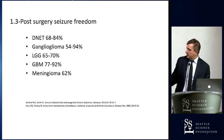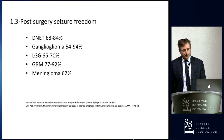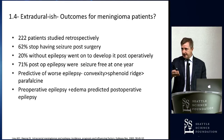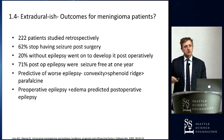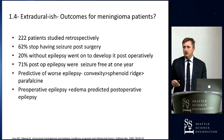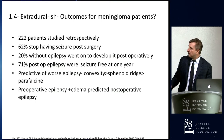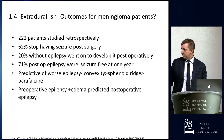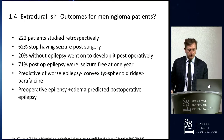Post-surgery seizure freedom numbers are listed — not necessarily betting numbers. For extradural meningiomas — which many consider easy to remove — plenty aren't easy. They can grow rapidly and dive down through the dura into cortical tissue, becoming really problematic. The convexity, sphenoid, and parafalcine cases tend to have the harder-to-control seizures.